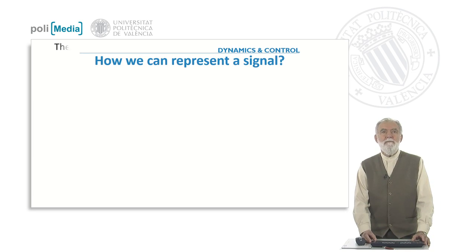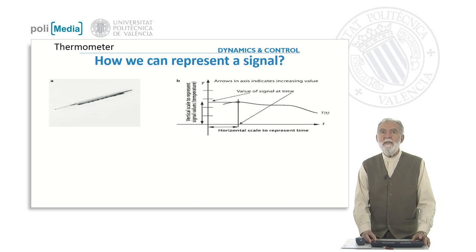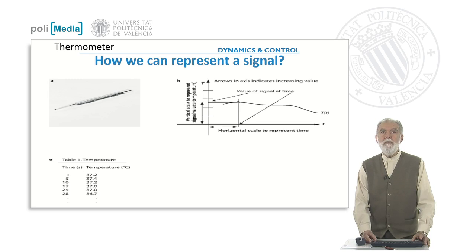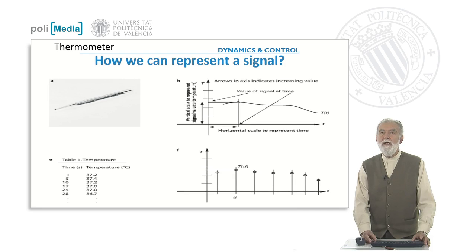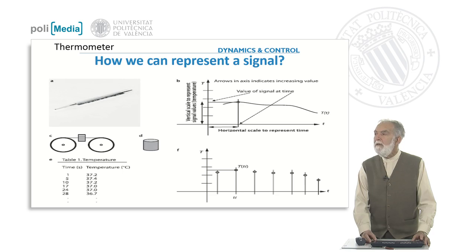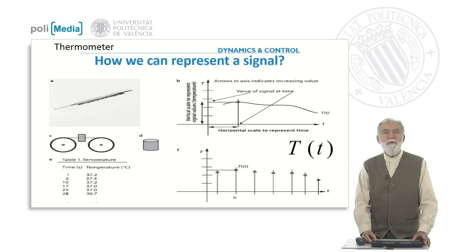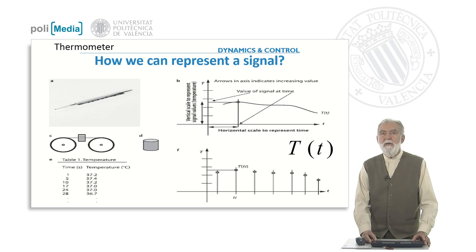How can we represent a signal? Consider, for instance, a thermometer. You have information and then you can represent it like a graph with the value of the temperature evolving over time. Or you can represent this signal as a table. Or you can represent a graph with only the temperature at the times you are measuring it. And you can store all this information in a tape or in a drum, and later on you can retrieve this information. In any case, what you are dealing with is the temperature as a function of time. The signal we are interested in is the temperature, and we can represent it like a table, like a graph, or store it in an electronic device.